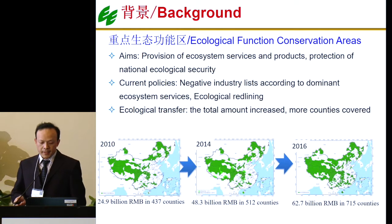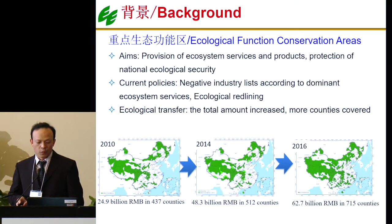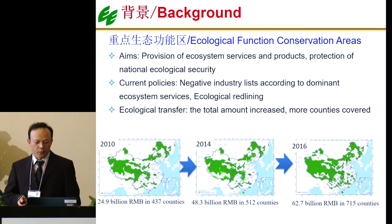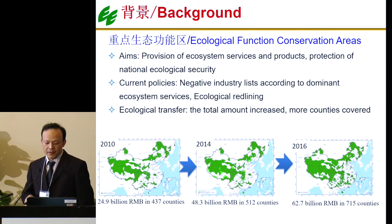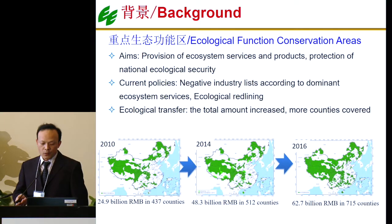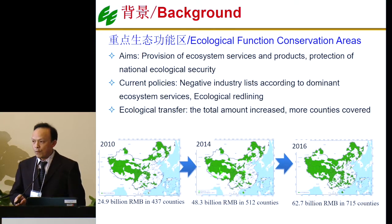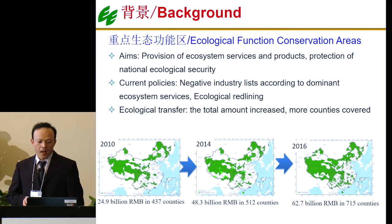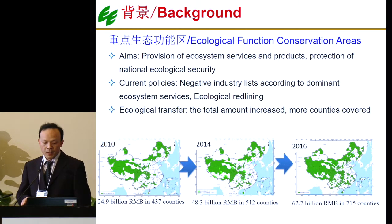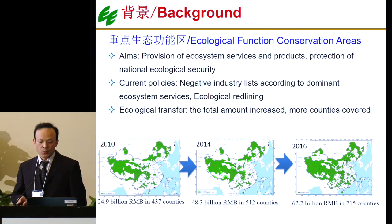The main purpose of this area is to provide ecosystem services and products, and it's the area related to national ecological security. So the government has implemented policies to protect important ecosystems, including negative industry lists according to the dominant ecosystem services. For example, if one place is an ecological function conservation area with water conservation and retention, then the mining industry or commercial forest logging is not allowed in this area.